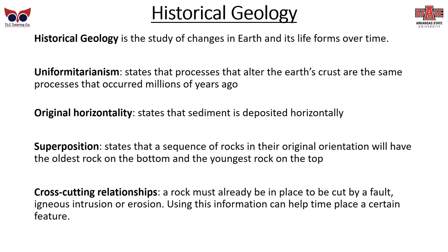Original horizontality states that sediment is deposited horizontally — that layers go on top of layers left to right horizontally. Superposition states that the sequence of rocks in their original orientation will have the oldest rock on the bottom and the youngest rock on top. And finally, cross-cutting relationships: a rock must already be in place to be cut by a fault, igneous intrusion, or erosion. Using this information can help place time on certain features.